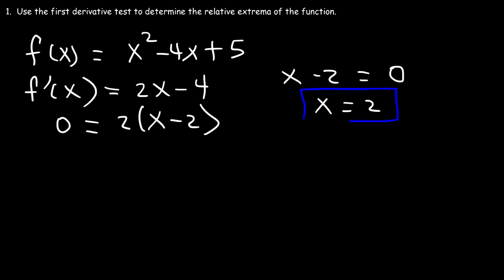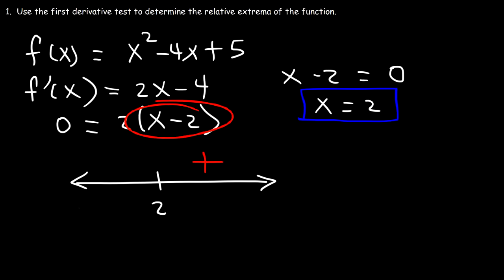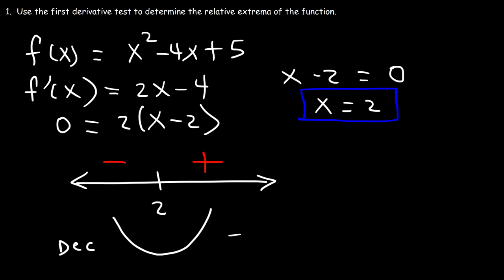Now once you have the critical number, make a sign chart. Draw a number line and put the critical number on it, then plug in some test points. To the right of 2, let's say at 3 — if we plug it into the first derivative, 3 - 2 is positive. Now if we plug in a number less than 2, like 1, then 1 - 2 is negative, so that gives us a negative result. So notice that the first derivative changes from negative to positive — on the left side the function is decreasing, and on the right side it's increasing.